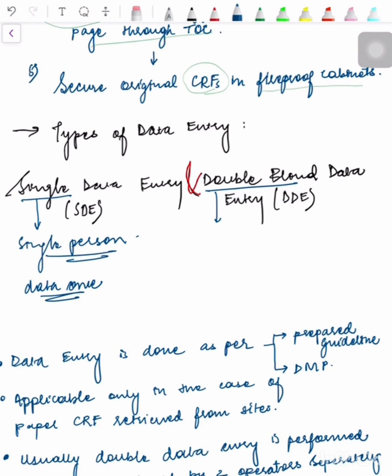It is entered by two persons and entered twice. This ensures a high degree of certainty - there are no chances of any kind of data mismatch or data error because we have entered in such a foolproof way that what is recorded on the Case Report Form is transcribed into the database as it is.